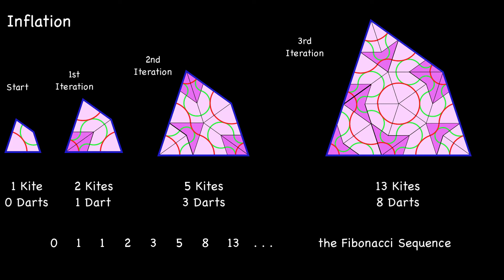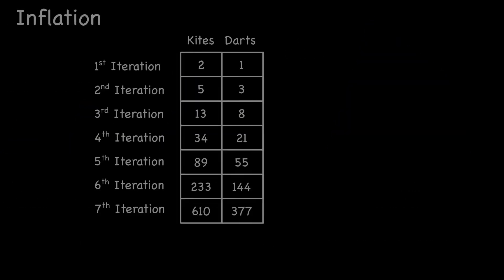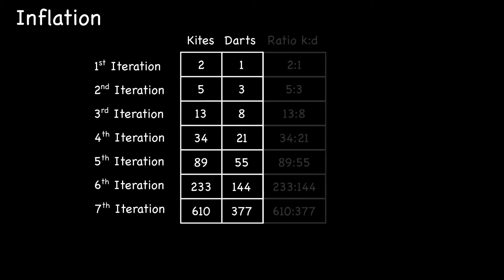What's interesting is the ratio of kites to darts from one iteration to the next. We've got two to one, five to three, 13 to eight as the tilings enlarge due to the inflation. Here's a table showing the first seven iterations with the numbers of kites and darts. Remember, this all starts from a kite. So the ratio, two to one, five to three, 13 to eight.